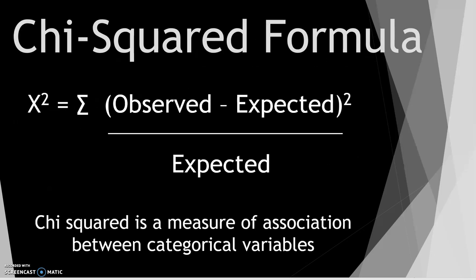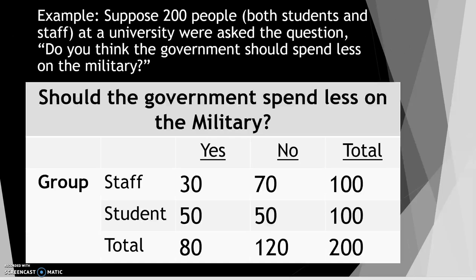The chi-squared statistic is a measure of association between categorical variables. The formula for chi-squared is: chi-squared equals the sum of the observed values minus the expected values, squared, over the expected values.